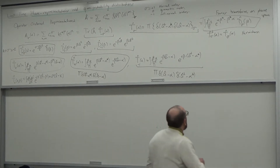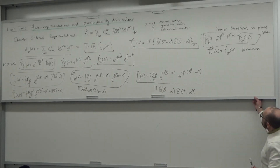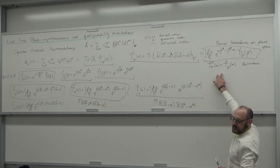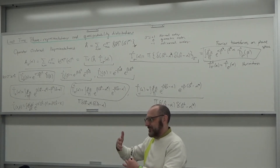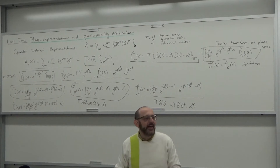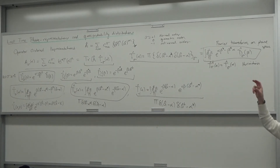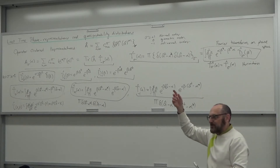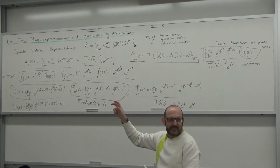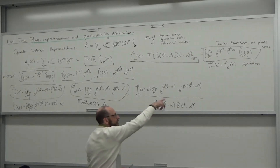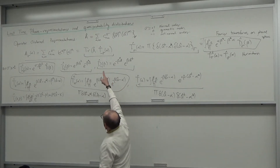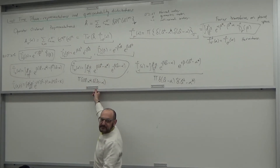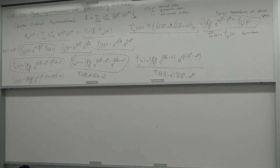I should emphasize one small point: these operators T — the delta functions — are Hermitian. The plane wave operators D are not Hermitian, right? But the delta functions are, in the same way that e to the ikx is not a real number, but the Fourier transform of it is. So if you take the dagger of this, you can check that it's equal. That's why when we did this trace I didn't have a dagger on it. The delta functions, like the plane waves, form a complete operator basis, and I can write any operator as an expansion.